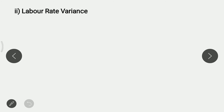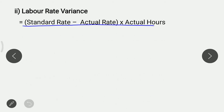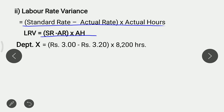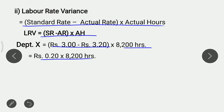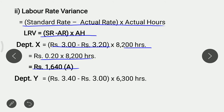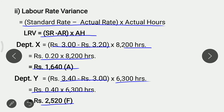Next variance: Labour Rate Variance = (Standard Rate − Actual Rate) × Actual Hours, i.e. SR − AR × AH. For Department X: (3 − 3.20) × 8,200 = 0.20 × 8,200 = Rs. 1,640 adverse. For Department Y: (3.40 − 3) × 6,300 = 0.40 × 6,300 = Rs. 2,520 favourable Labour Rate Variance.